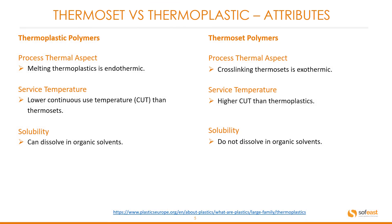Looking at the processed thermal aspect attributes for both polymers: melting thermoplastics is endothermic, whereas cross-linking thermosets is exothermic. Thermoplastics have a lower continuous use temperature (CUT) than thermosets. Obviously, a thermoset has a higher CUT than thermoplastics.